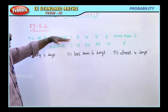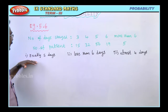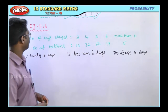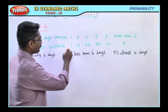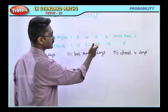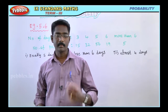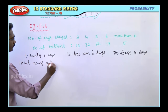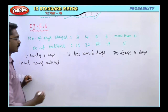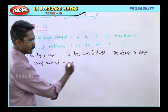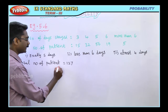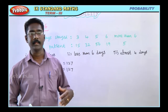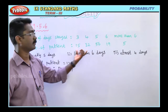Now, the number of days in the first row and number of patients in the second row. The total number of patients: n is equal to 127. So n equals 127, which is the total number of patients in this dataset.